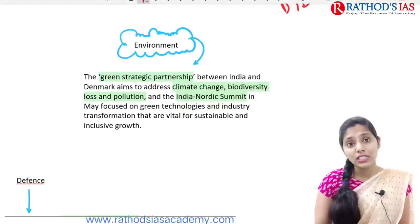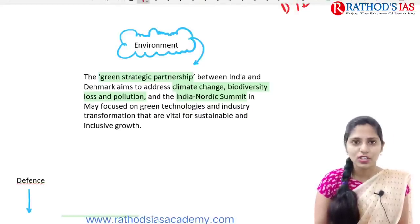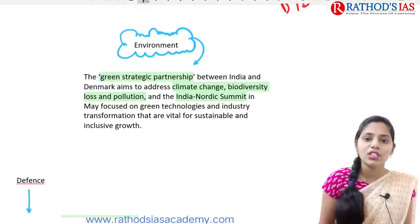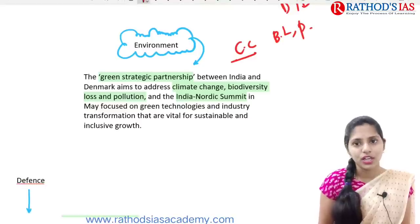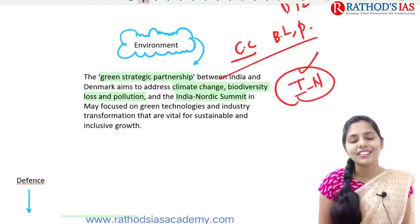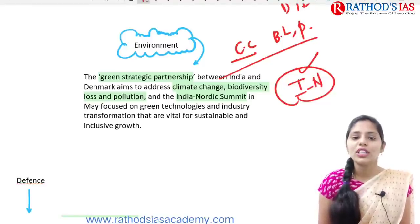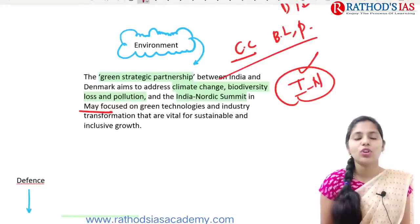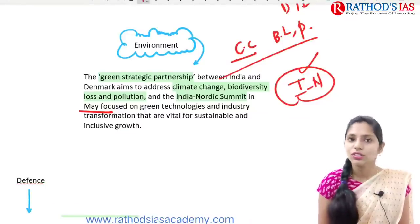In the area of environment, we came up with the green strategic partnership, which is focusing on climate change, biodiversity loss, and pollution. Recently we also came up with the India-Nordic summit. Let me know which are the Nordic countries in the comment box. The India-Nordic summit mainly focused on green technologies and industry transformation, which will be very helpful for sustainable and inclusive growth.